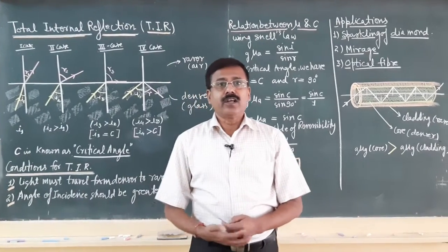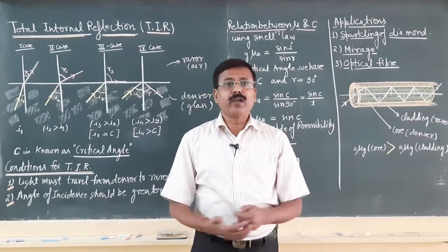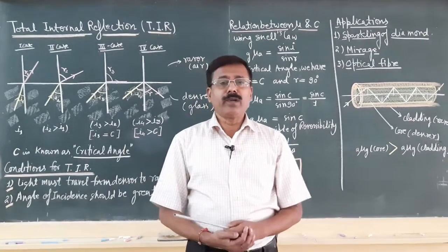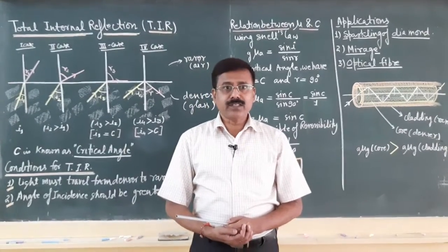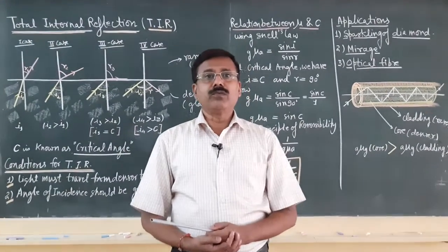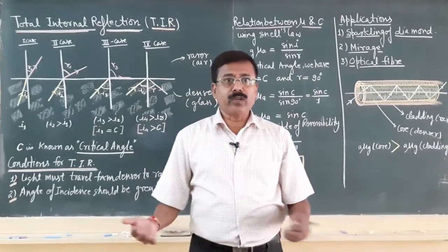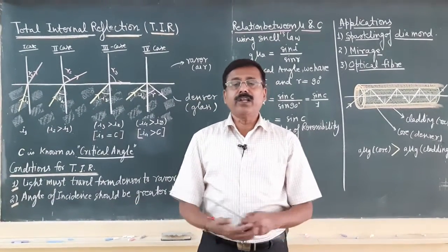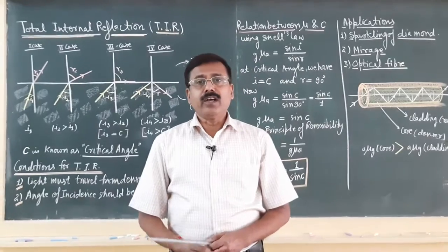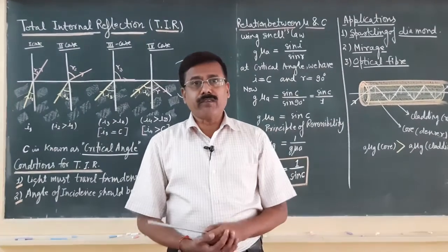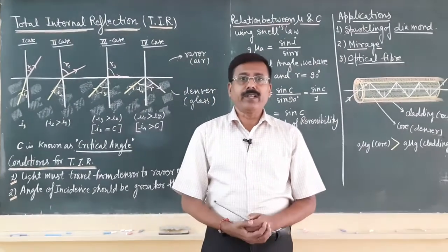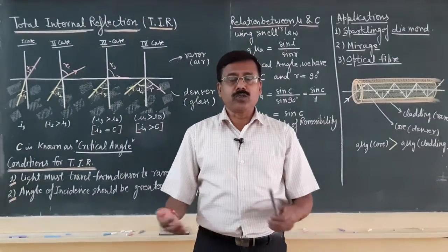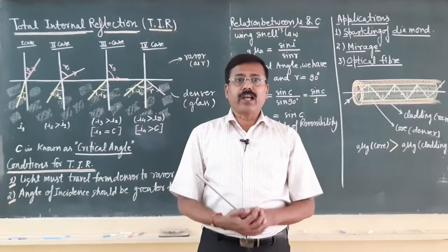Today we will discuss the phenomenon of total internal reflection. There are so many examples around us working according to this phenomenon. The fundamental condition for this phenomenon is that light should travel from denser to rarer medium and the angle of incidence should be greater than the critical angle.